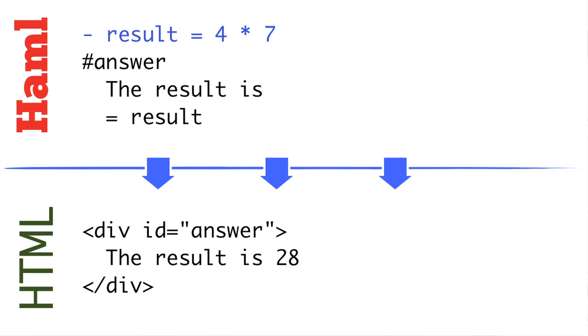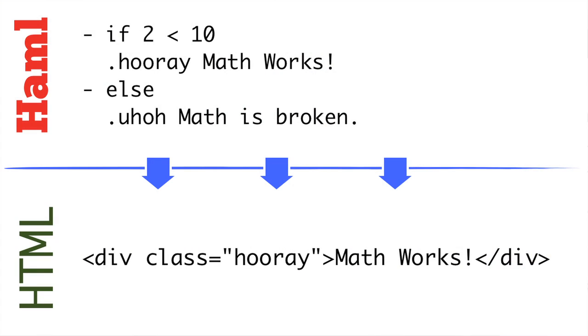Sometimes we just want code that is not output into our HTML — that's when the dash comes in handy. For example, we can set a variable by leading our line with a dash: we set result equals 4 times 7, and then later use the equal sign to echo out that content into our HTML. Another example of using the dash is for if, else, loops, and other language constructs. If we have an if statement, we start with a dash and use our if statement, and anything indented into that will be part of the if clause. We can also have an else clause. Since 2 is less than 10, we get the first code block — a div with the class Hooray and the content MathWorks. After playing with Haml for a couple hours, you're probably going to find it hard to go back to full HTML.